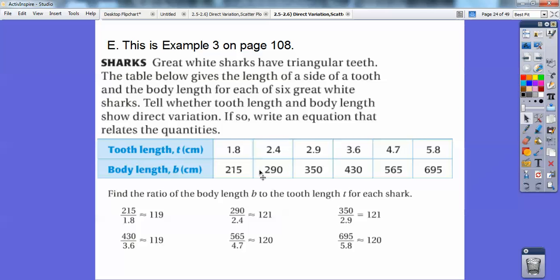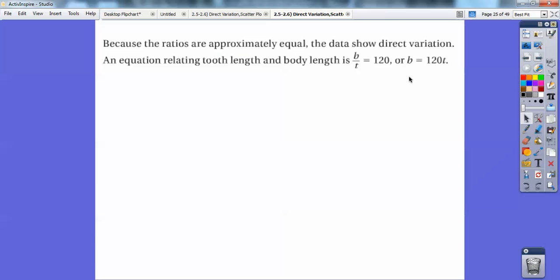And when I did that, this number divided by this, this divided by this, I get, they're all, this is 119, 121, 120. I'd say they're all pretty close to 120. So I'm going to say, yes, these guys are direct variation. And then so this would be my A, my constant variation would be that 120. So the body length is equal to 120 times a tooth length right there.